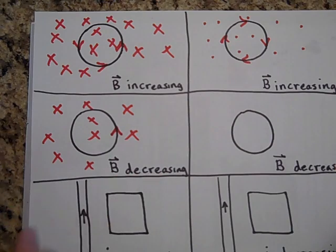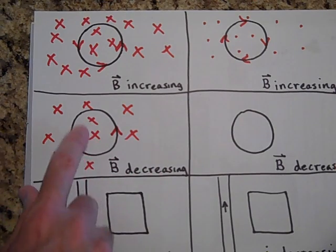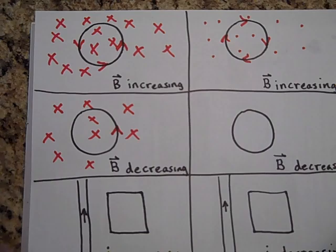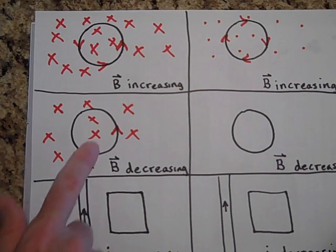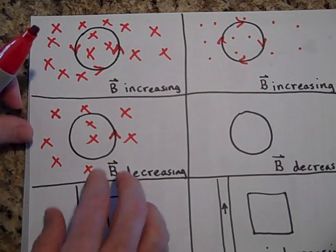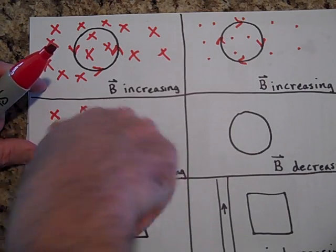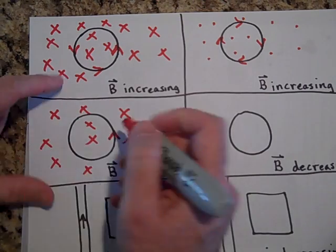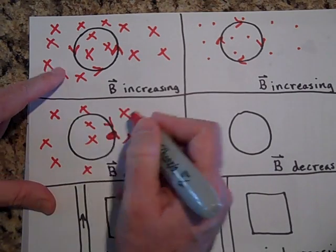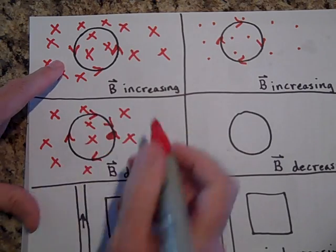B is decreasing, so the x's are going down. It's going to try to make its own x's, and so to make its own x's, the current is going to go the other way. My apologies — hopefully you didn't get confused. See how that makes its own x's.